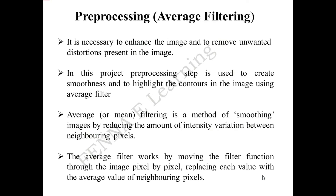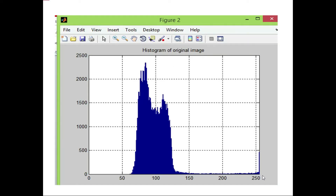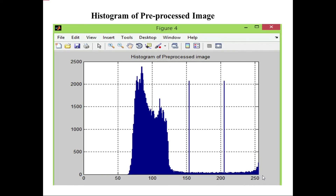The first step is pre-processing, performed using an averaging filter. The averaging filter, otherwise called the mean filter, is used to perform smoothening of the images. The smoothening operation is performed by reducing the amount of intensity variation between neighboring pixels. This is the output of the pre-processed image, along with the histogram plot of the original image and the histogram plot of the pre-processed image.